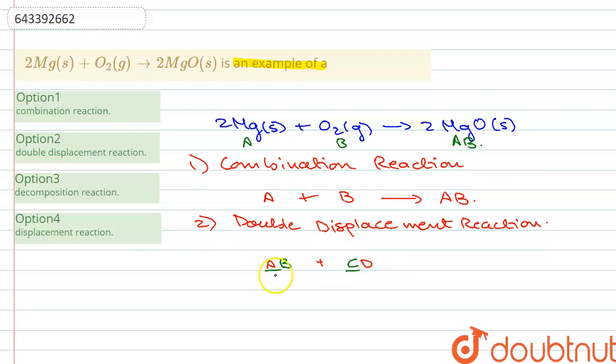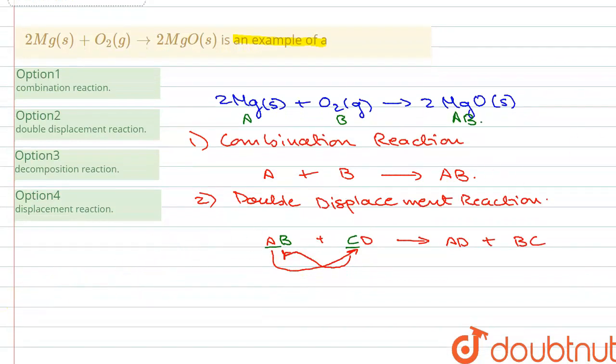Now what they will do is they will displace each other from their molecules and form combination or displaced molecules. So what they are going to do is A is going to displace C and C is going to displace A. And C is going to combine with B and A is going to combine with D. So the products are going to be something like this, AD plus BC. This is the example of double displacement reaction in which the reactants displace each other from their respective molecules.